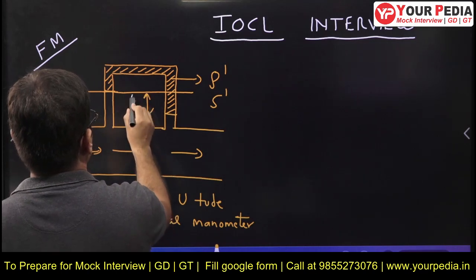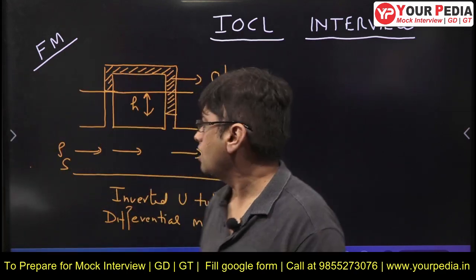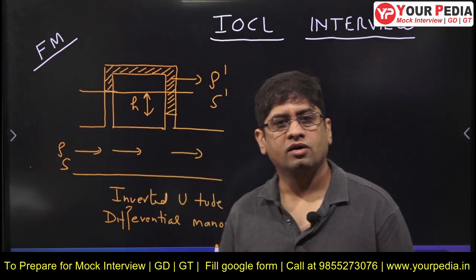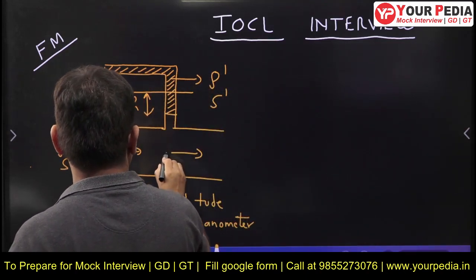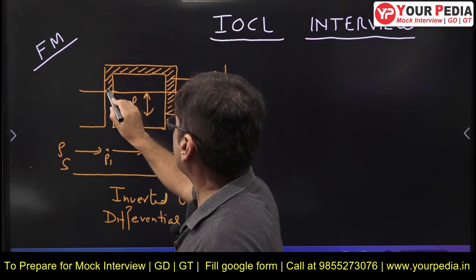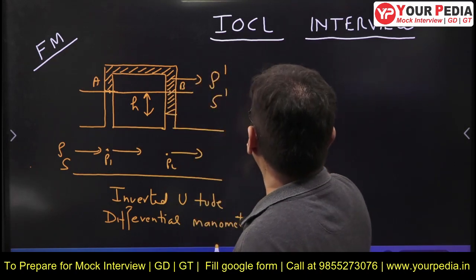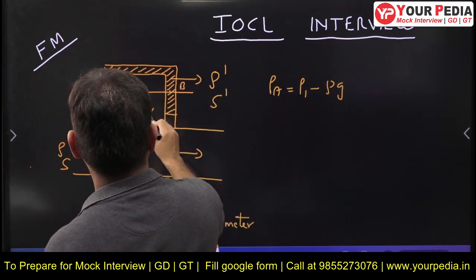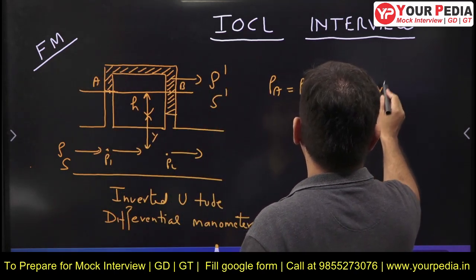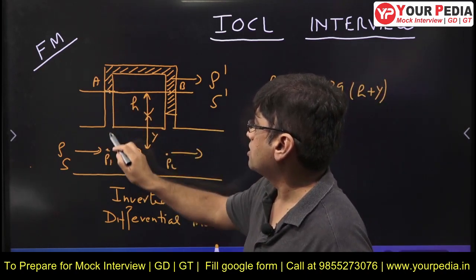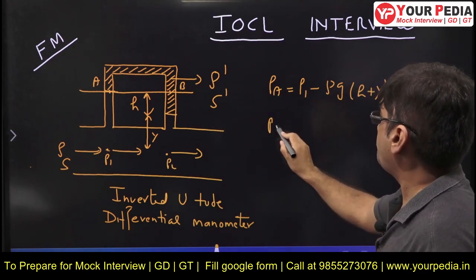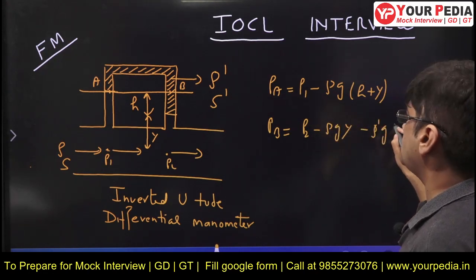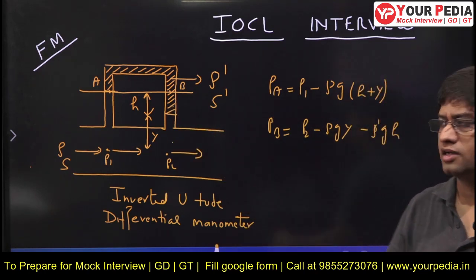Let us calculate the pressure difference. Let the column height difference be h, with pressure P1 on one side and P2 on the other. Calling the reference points A and B: pressure at A is P1 minus rho*g*(h + y). Pressure at B is P2 minus rho*g*y minus rho_dash*g*h, where rho_dash is the density of the manometric liquid.